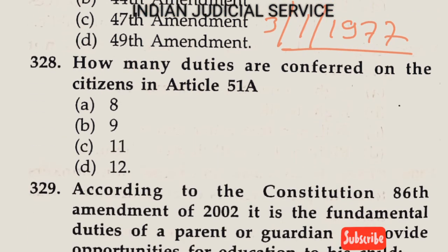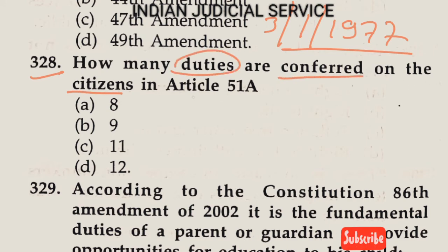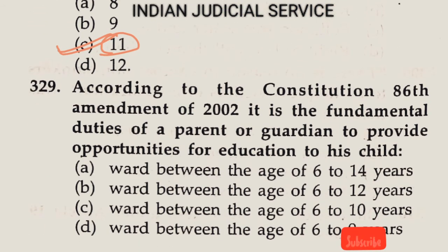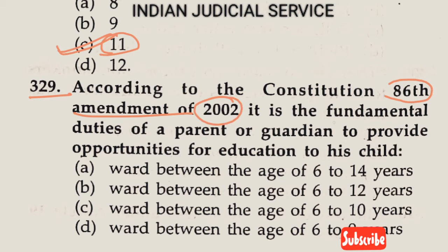Question Number 328: How many duties are conferred on citizens in Article 51A? The answer is clearly Option C — 11 Fundamental Duties for citizens.